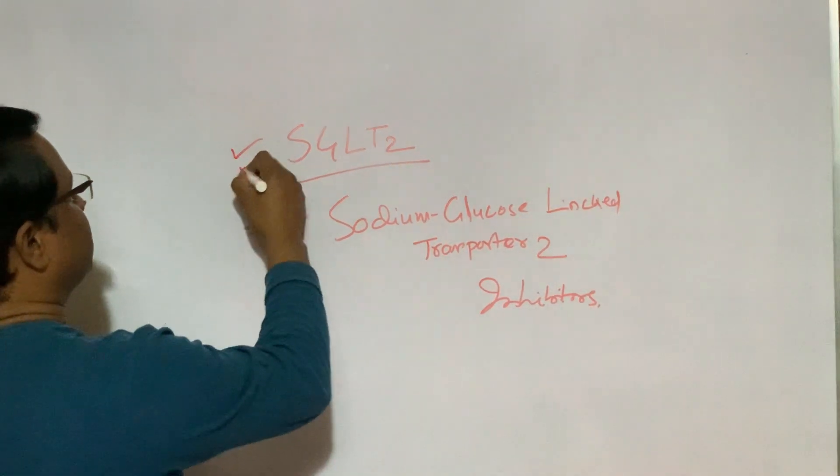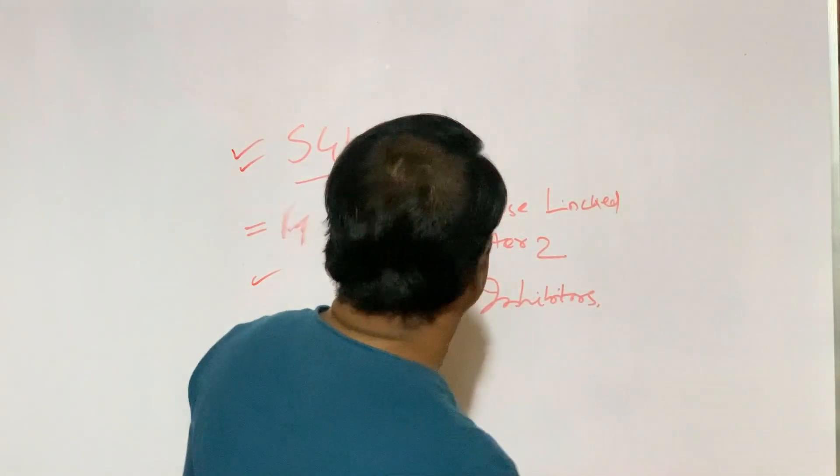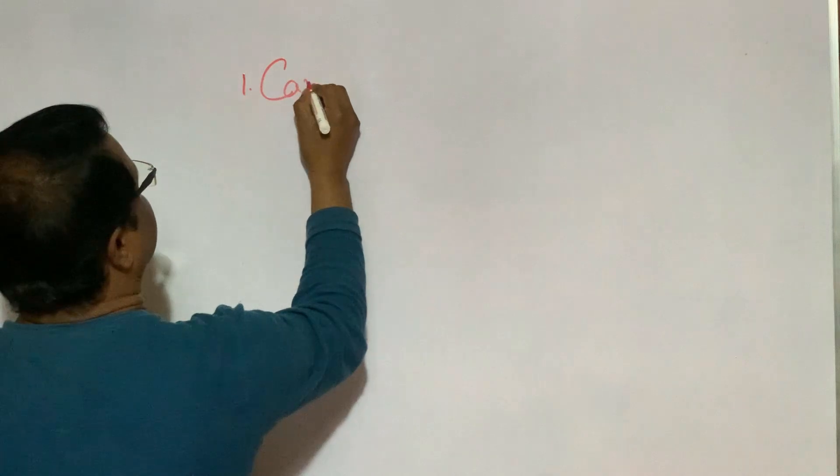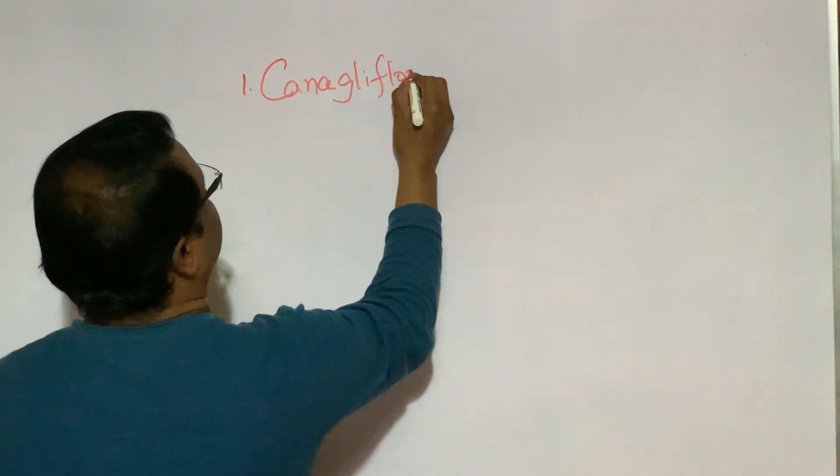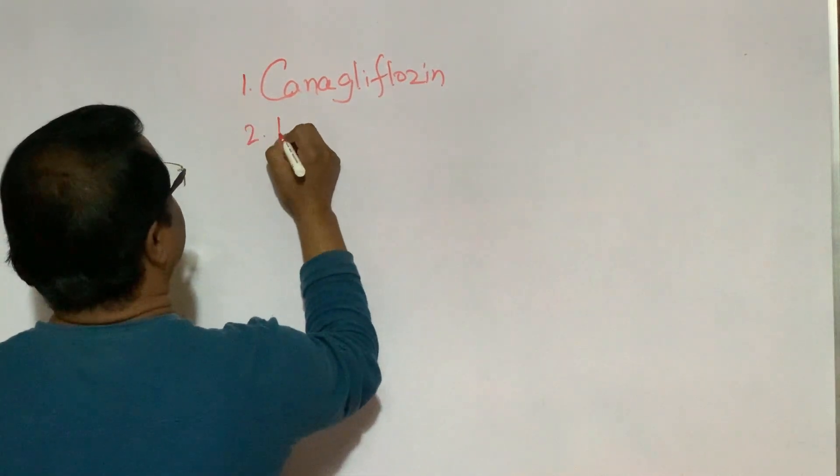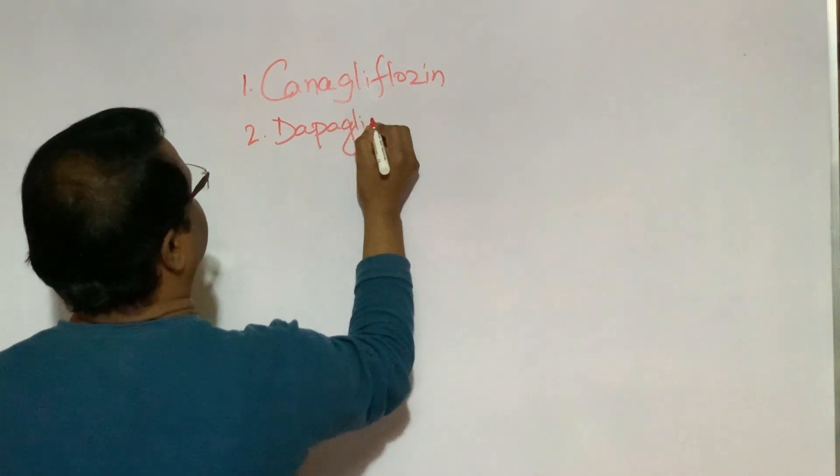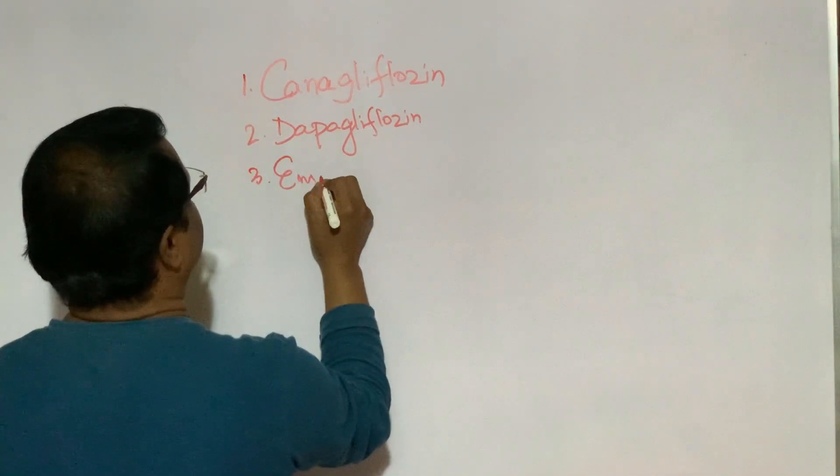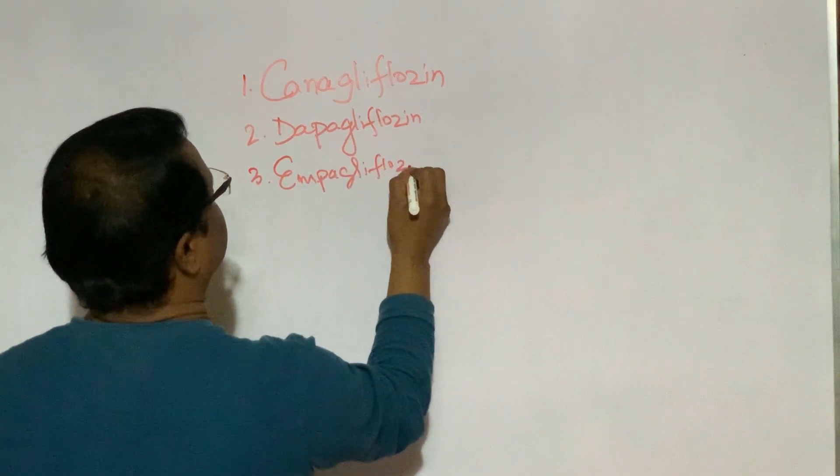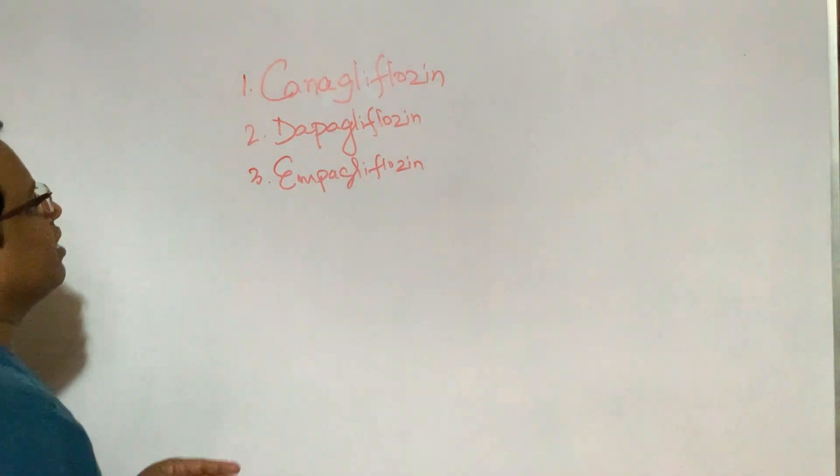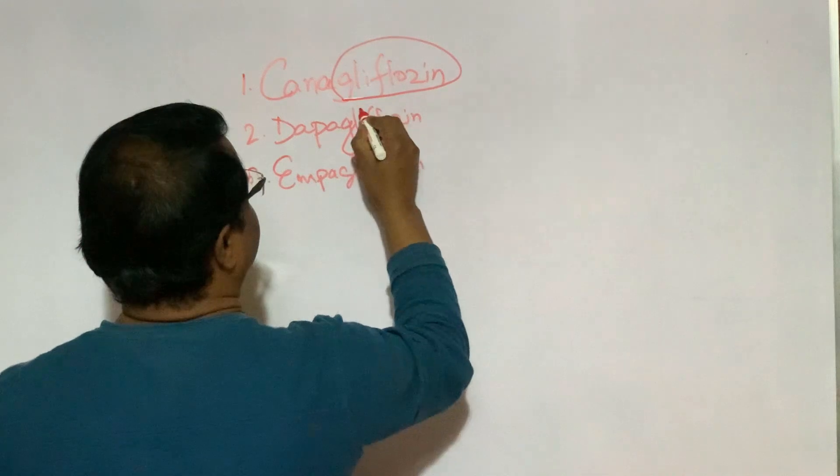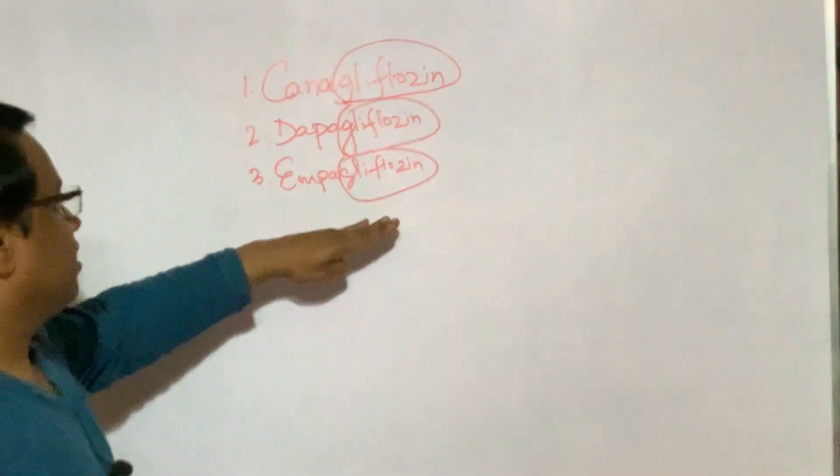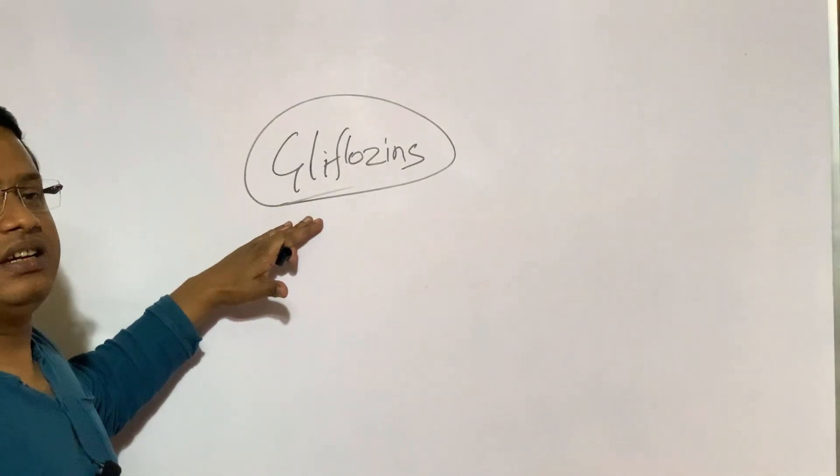A newer class of drug. There are so many drugs in this group, three are very important: number one, canagliflozin; two, dapagliflozin; empagliflozin. Here the common thing is gliflozin, so this group of drug is called gliflozin.